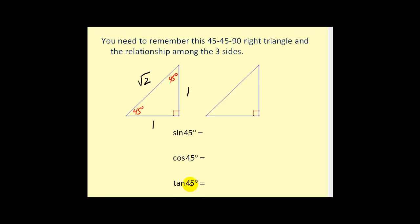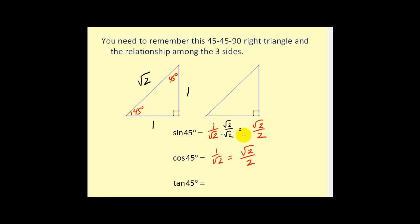We can use this right triangle to find the trigonometric function values for 45 degrees. The sine of 45 degrees is opposite over hypotenuse: one over the square root of two, which rationalizes to square root of two over two. The cosine of 45 degrees is also adjacent over hypotenuse: one over the square root of two, or square root of two over two. The reason these are the same is that the opposite and adjacent sides have equal length. The tangent of 45 degrees is opposite over adjacent: one over one, which equals one.